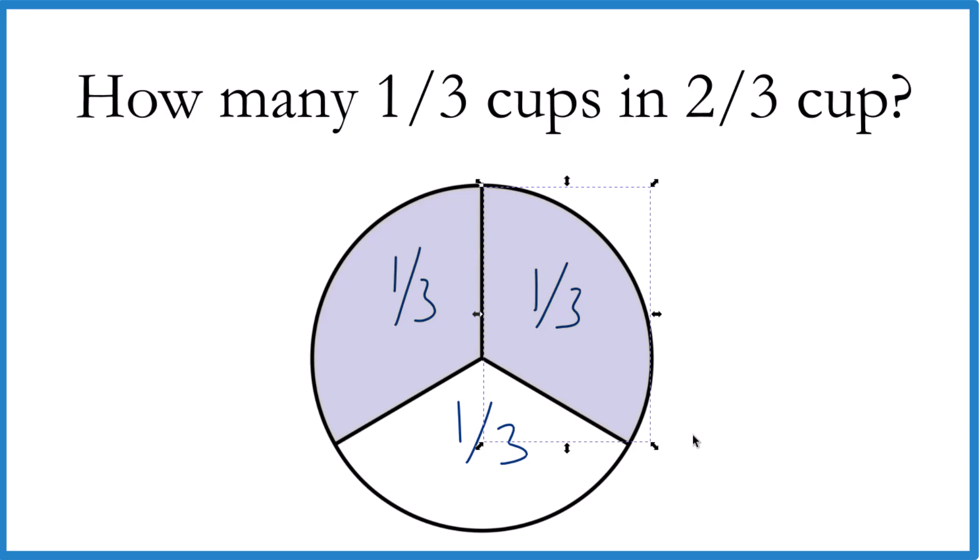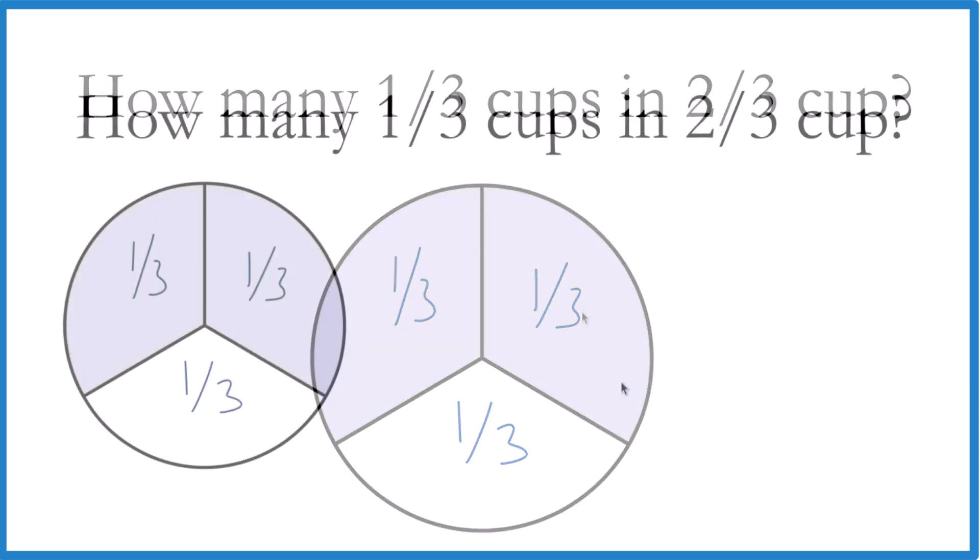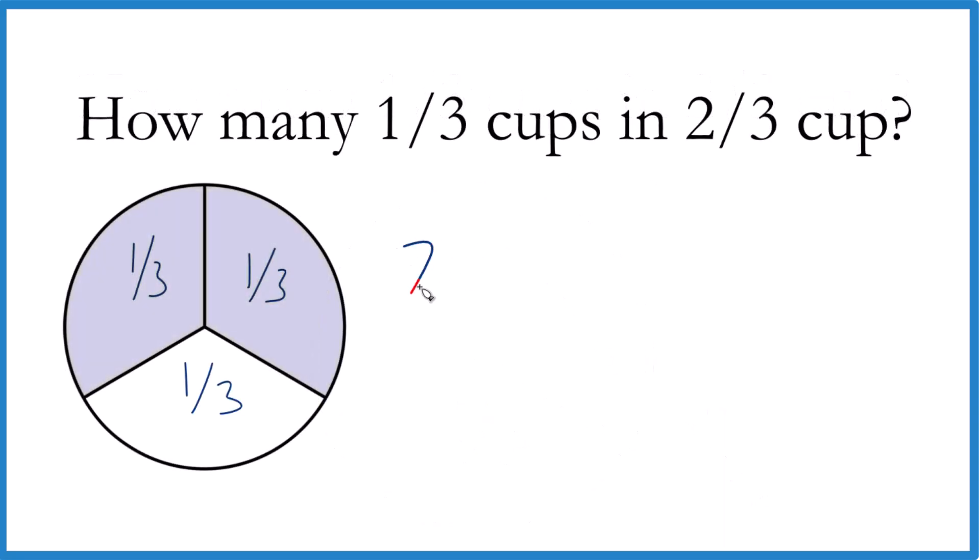Let's take a look at that. Basically, we have our two-thirds of a cup, and we want to know how many times one-third goes into two-thirds. So we're going to divide two-thirds by one-third.